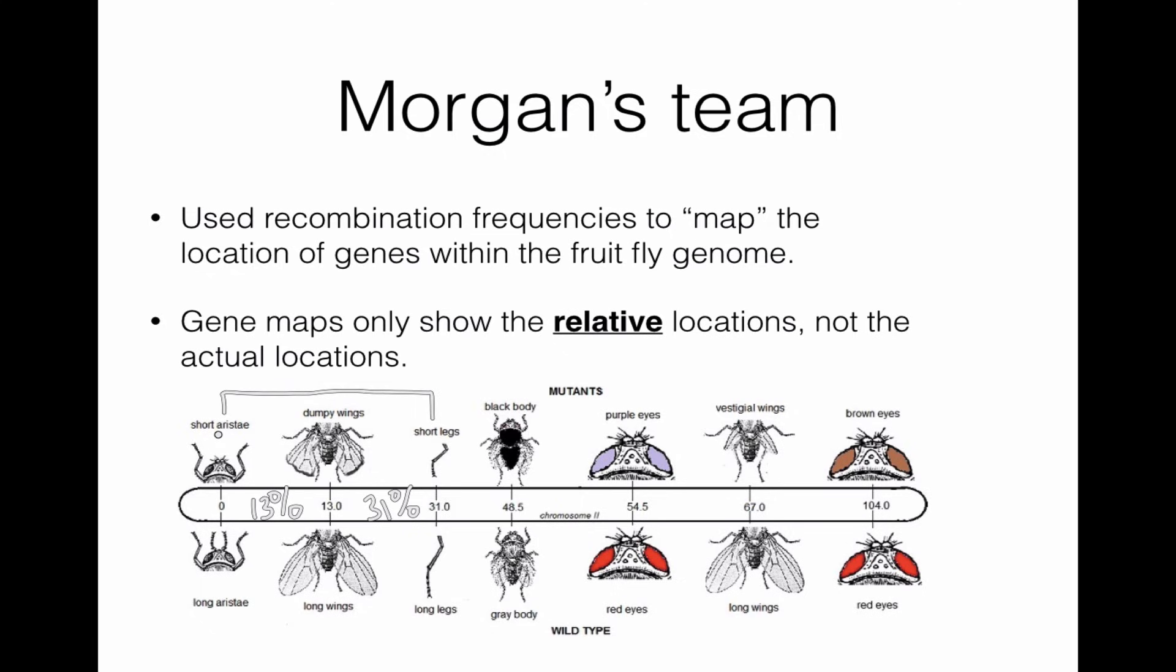Now, if he did a comparison between the short antennae and purple eyes, you notice that's over 50 map units apart. So these are, if this is going to cross over so much that you can't really tell for sure that they're on the same chromosomes, on the same chromosome by comparing the purple eye gene to the aristae one, but you can tell they're on the same chromosome by comparing it to a closer one. So I'm hoping that makes sense. But between these, you can figure out the different map units.